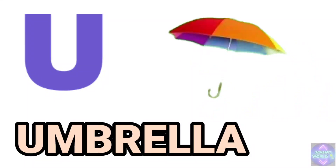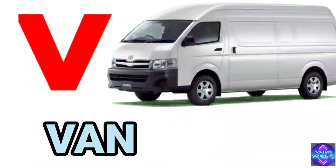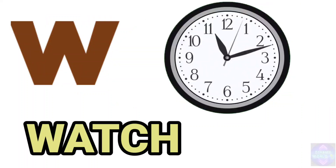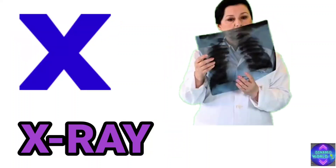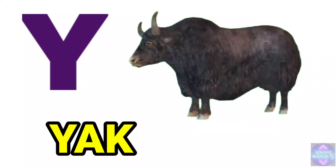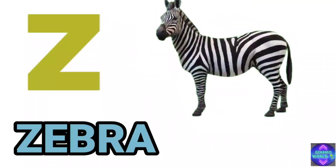U. U for umbrella. V. V for van. W. W for watch. X. X for x-ray. Y. Y for yak. Z. Z for zebra.